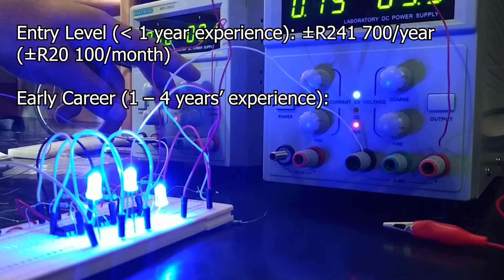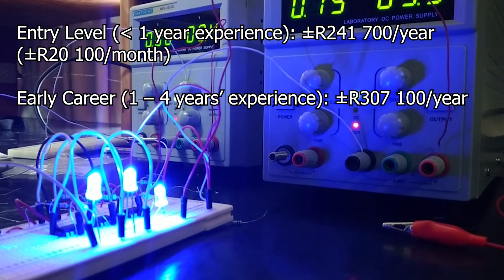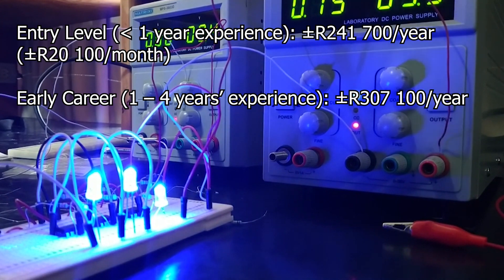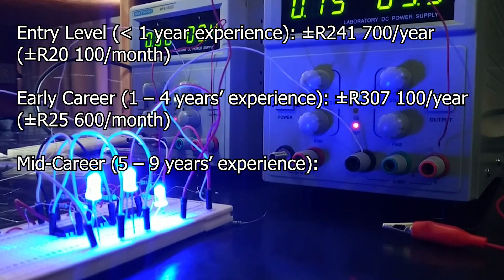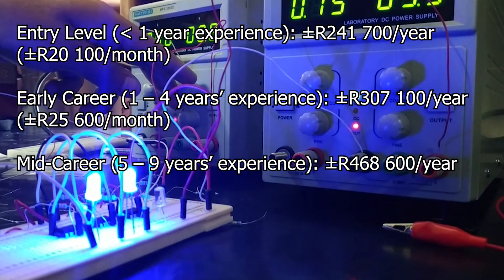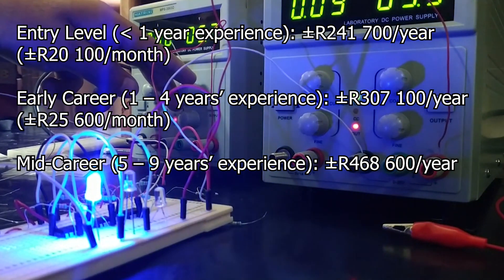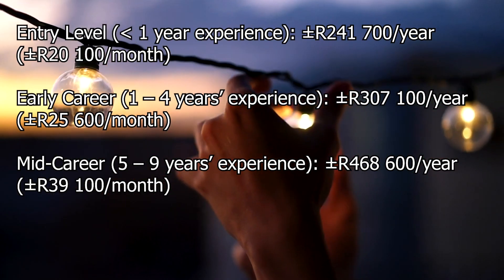Early career, which is one to four years of experience, is about R307,100 per year, which is about R25,600 per month. Mid career, which is five to nine years of experience, is about R468,600 per year, which is about R39,100 per month.